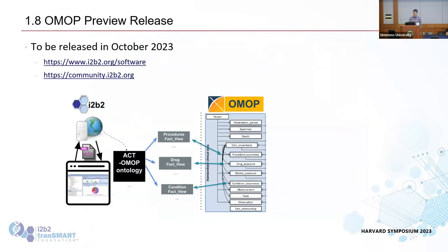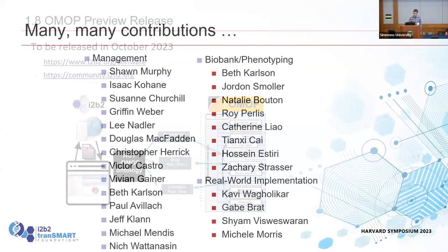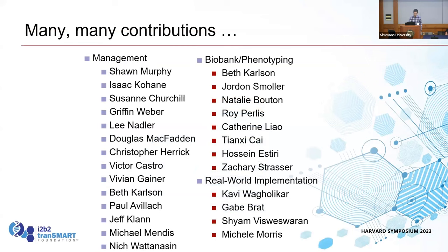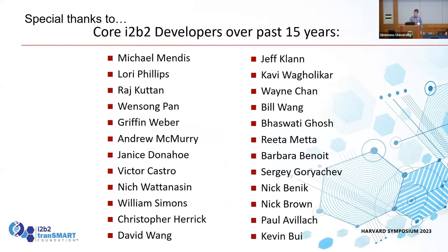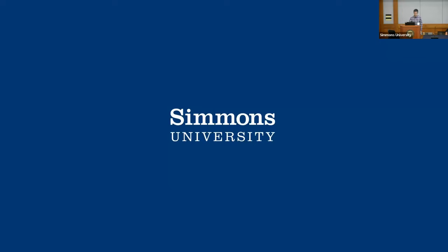The timeline plugin also works — it allows you to view certain facts about the queried patient set on a timeline, and you can click on the tick marks to get more information. That was quite a trick to get working; it required a lot of careful work with the views to make them look exactly like fact tables. We're going to release this next month as part of the i2b2 1.8 preview release — you'll be able to download it from the software download page of the community website. There are many contributors to i2b2, and I have an acknowledgement slide. That's all I've got — thank you.